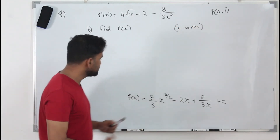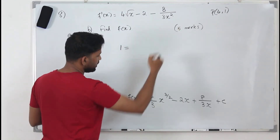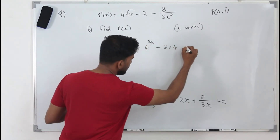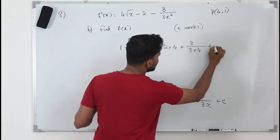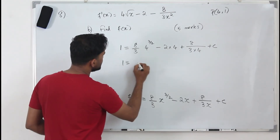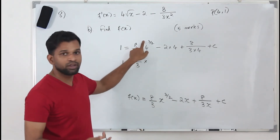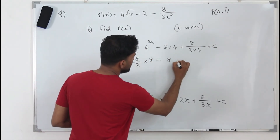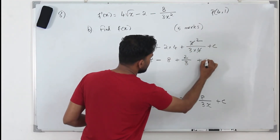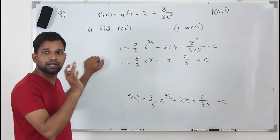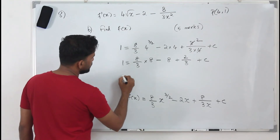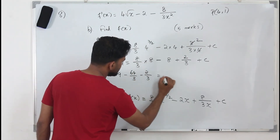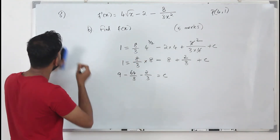Take the x and y coordinates and substitute into f(x) — f(x) is basically y. So y is 1: 1 equals 8 over 3 times 4 to the power 3/2, minus 2 times 4, plus 8 over 3 times 4, plus c. Now 4 to the power 3/2 is 2 cubed which is 8, so it becomes: 8 over 3 times 8, minus 8, plus 2 over 3, plus c. Bringing all numbers to one side: 1 plus 8 is 9, minus 64 over 3, minus 2 over 3, equals c.